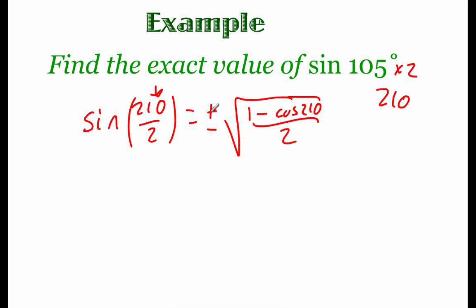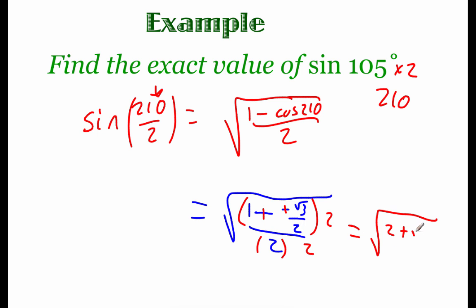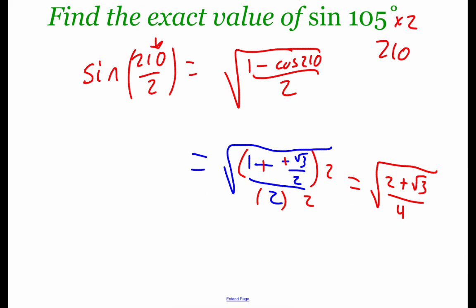First, let's clean up the sign: 105 is in the second quadrant and sine is positive there, so we take the positive square root. Evaluating, cosine of 210 is negative root 3 over 2, giving us the square root of 1 minus negative root 3 over 2, all over 2. We have a double negative turning positive, and a fraction inside a fraction, so we multiply top and bottom by 2. That gives us 2 plus root 3 on top and 4 on the bottom. Taking the square root of the fraction gives square root of 2 plus root 3, all over 2, as our final answer.